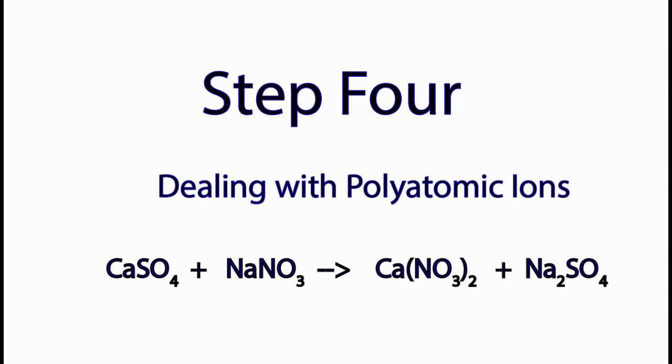Step four. Sometimes we'll have equations that look downright scary. But if we have a polyatomic ion on both sides, like the SO4 or the NO3, then we can consider that ion to be just one thing. Let's see how that works.